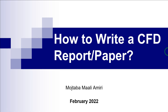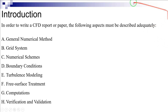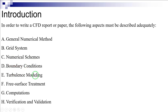Hi everyone. Today I'm going to talk about how to write a CFD report or paper. In order to write a report or paper based on CFD solutions, several aspects regarding the CFD model and the solutions must be described adequately. These aspects are: general numerical method, grid system, numerical schemes, boundary conditions, turbulence modeling, free surface treatment if your simulations involve modeling the free surface, and finally verification and validation. In the following sections, each of these aspects is explained in more detail.